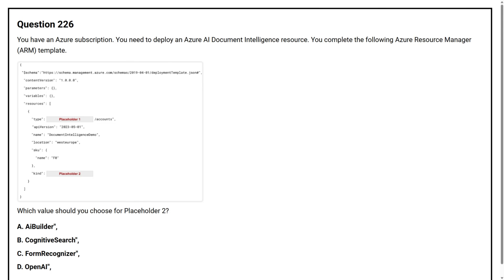Question number 226. You have an Azure subscription. You need to deploy an Azure AI Document Intelligence resource. You complete the following Azure Resource Manager template. Which value should you choose for placeholder 2? Option A: AI Builder. Option B: Cognitive Search. Option C: Form Recognizer. Option D: Open AI. The correct answer is Option C, Form Recognizer.